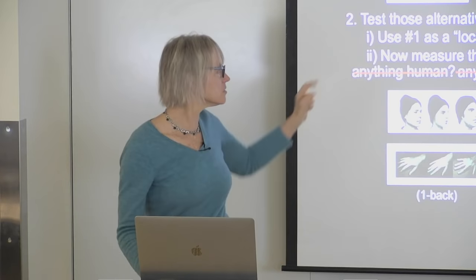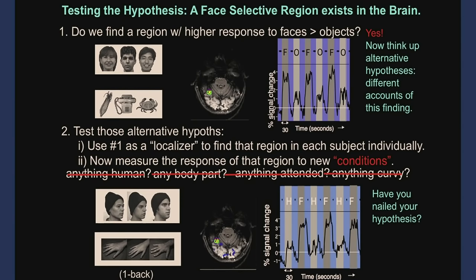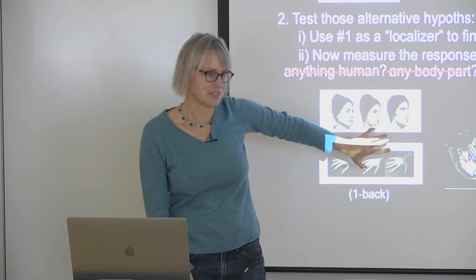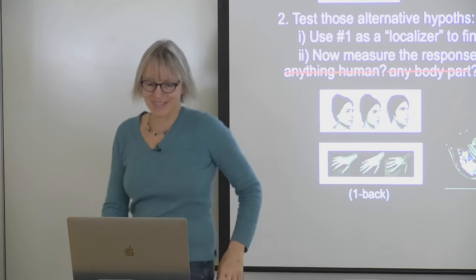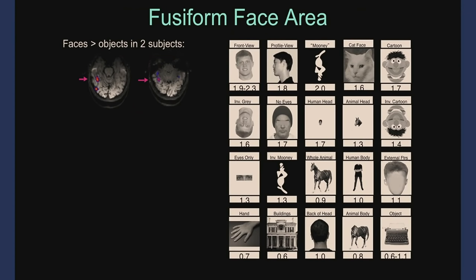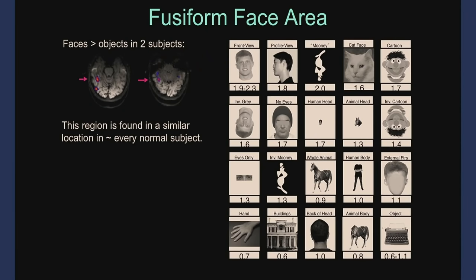Skipping ahead to give you the gist: this field has been going on for a long time and there are now hundreds, maybe thousands, of studies of this region. In my lab, we've tested the response of this region to lots of different kinds of stimuli using the same method — localize it in each subject, measure its response. What we know now is that this region is found in roughly the same location in pretty much every normal subject, and it responds more to faces than to any other kind of stimuli anyone has ever tested.